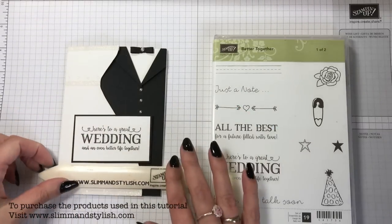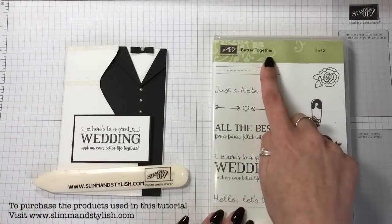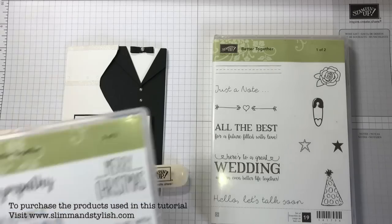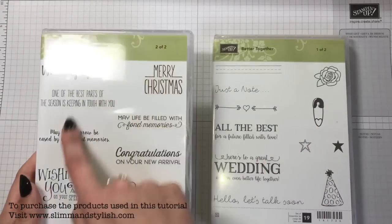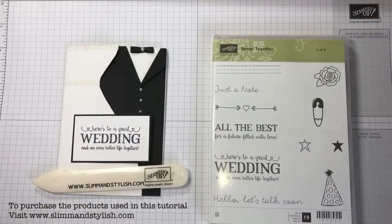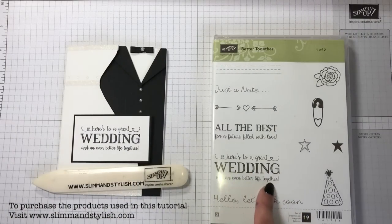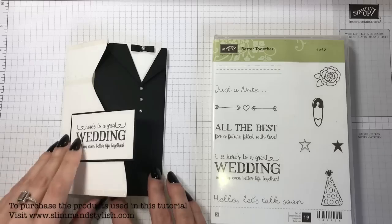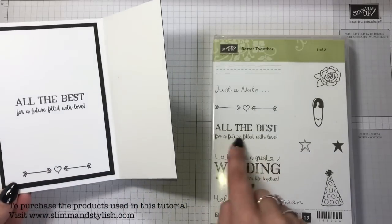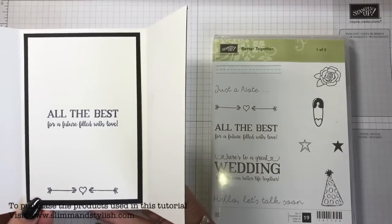This card will be given to the bride Charlie today. I'm going to quickly show you it's using the Better Together stamp set. This is one of two stamp sets, you get two for the price of one. I'm using the one that says here's to a great wedding and an even better life together, and then inside the card I have put all the best for a future filled with love and the arrows and the hearts as well.